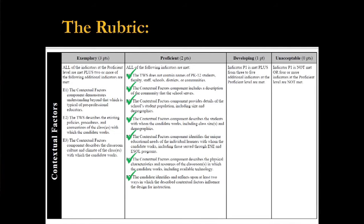And last, indicator seven: identify two factors in the contextual factors that influence how you design instruction. A great way to do that is to look at the rubric, look at indicators one through six, and decide how does that impact how I'm going to teach? How does indicator three impact how I'm going to teach? And that'll give you things that you can reflect on to include in that.